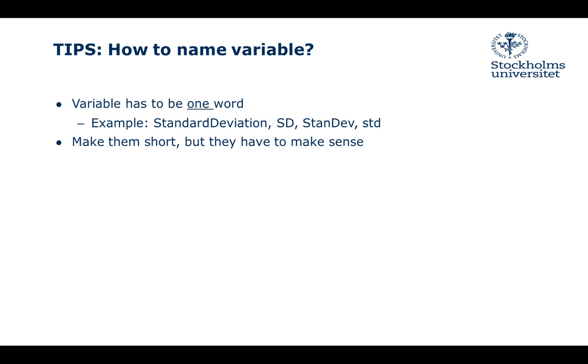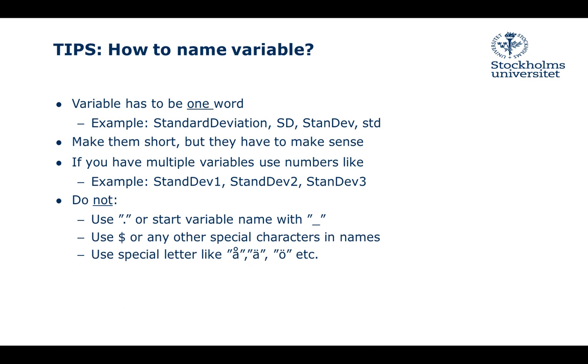Make them short, but they still have to make sense. You're going to have more than one variable, so it's important that you use understandable variable names. If you have multiple variables, use numbers like std1, std2, and std3. Do not use periods or slashes. Do not use dollars or any other special characters in names, and avoid special characters like the Swedish alphabet.